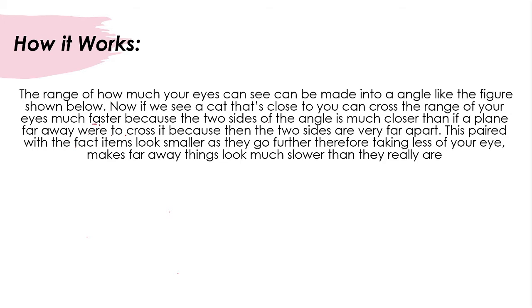The range of how much your eyes can see can be made into an angle, much like the figure shown below. Now, if you see that a cat is close to you, the cat can cross the range of your eyes much faster because the two sides of the angle are much closer.